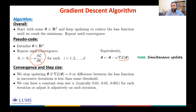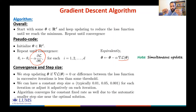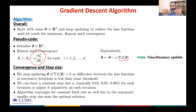Even with a fixed alpha, the algorithm converges due to automatically smaller step sizes near the optimal solution. The gradient itself decreases to zero as you approach the local or global minimum, so the effective step size naturally shrinks and the algorithm won't oscillate.